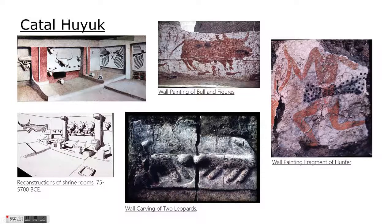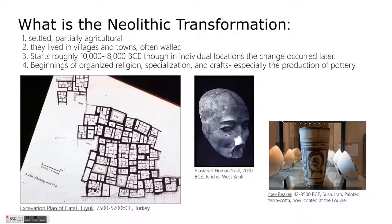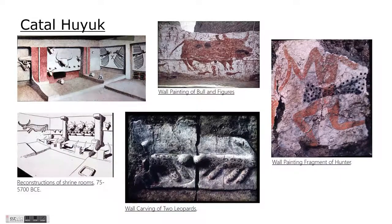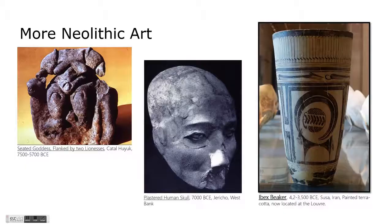Going back to Çatalhöyük for a moment — among the wall paintings, there is one that is the very first example we have of an image used as a map. It includes an above view of the city, somewhat like this map here, along with the location of a nearby volcano. That's pretty remarkable.